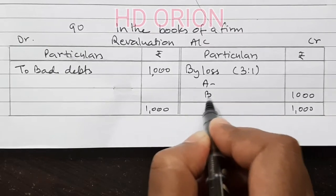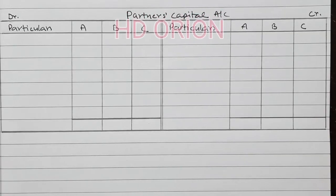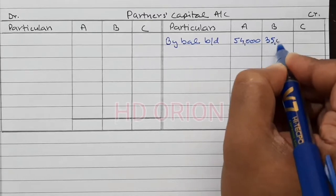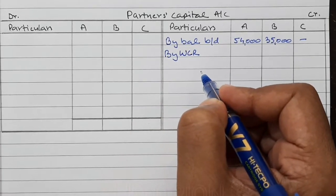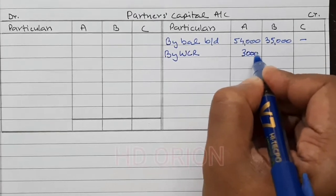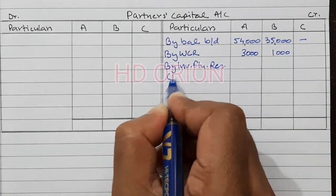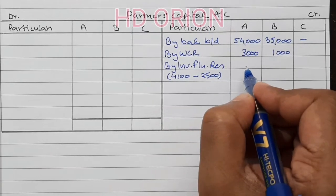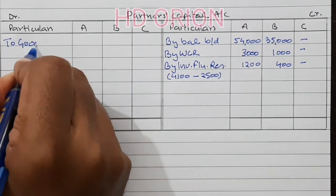Old partners are A and B, so 750 and 250. Let us see the partners capital account. Starting with opening balance — by balance brought down: 54,000 and 35,000. Then by Workman Compensation Reserve: 6,000 but Rs. 2,000 is the liability to be maintained, so Rs. 4,000 will be given to partners in the old ratio 3:1. Then by Investment Fluctuation Reserve: 4,100 but decrease in value of investment is 2,500, so Rs. 1,600 will be given to old partners in old ratio — 1,200 and 400. Then old goodwill in old ratio: 30,000 and 10,000.